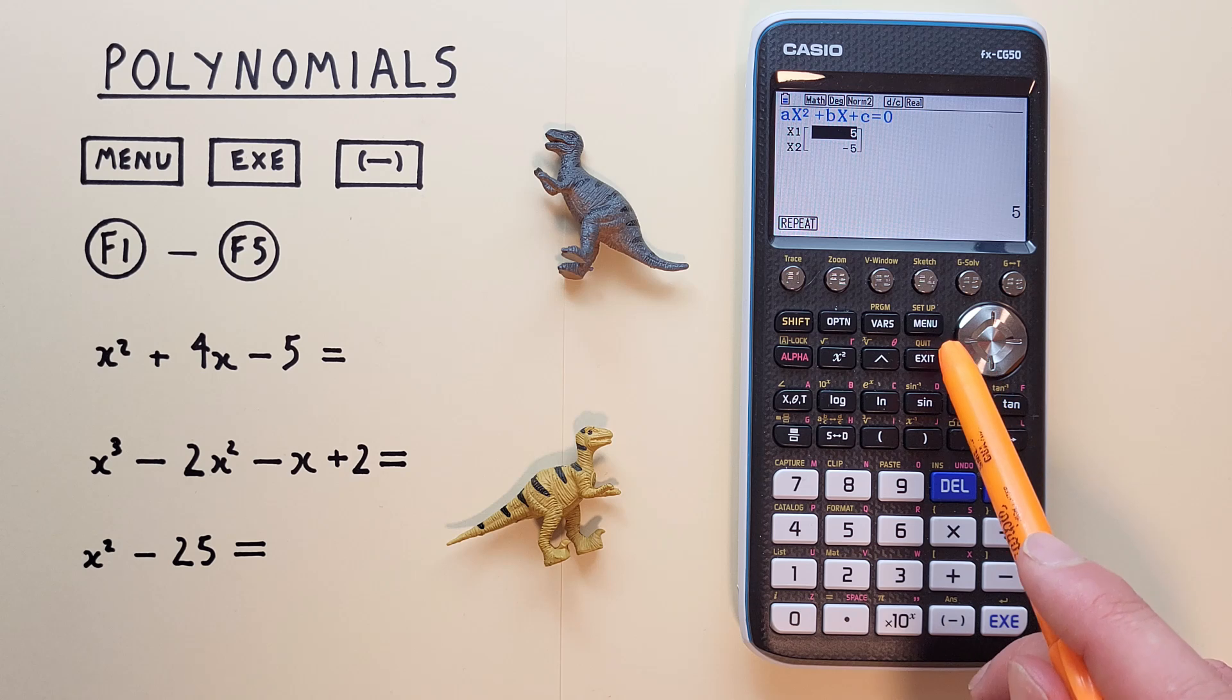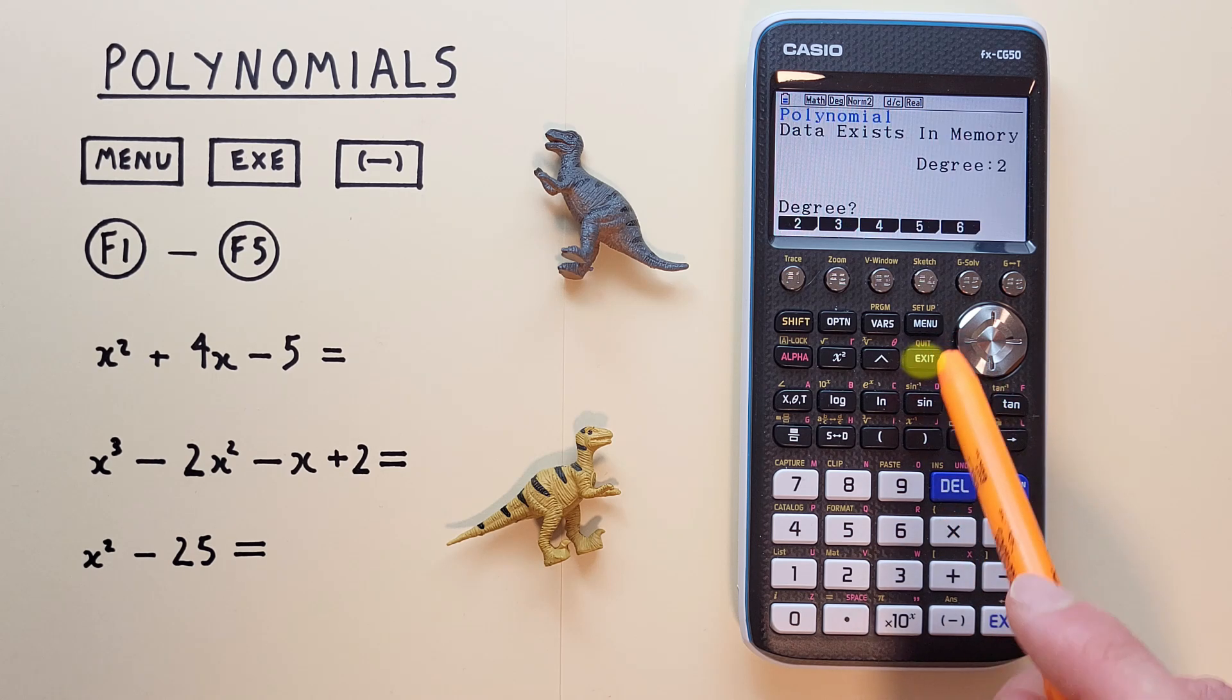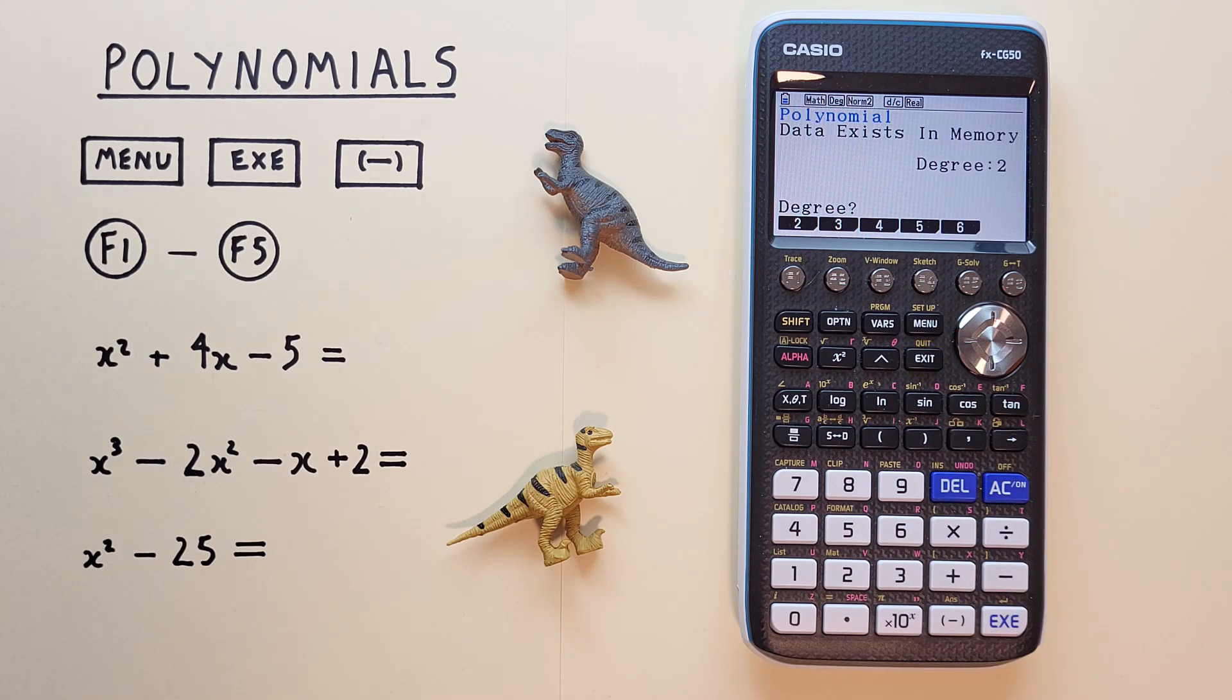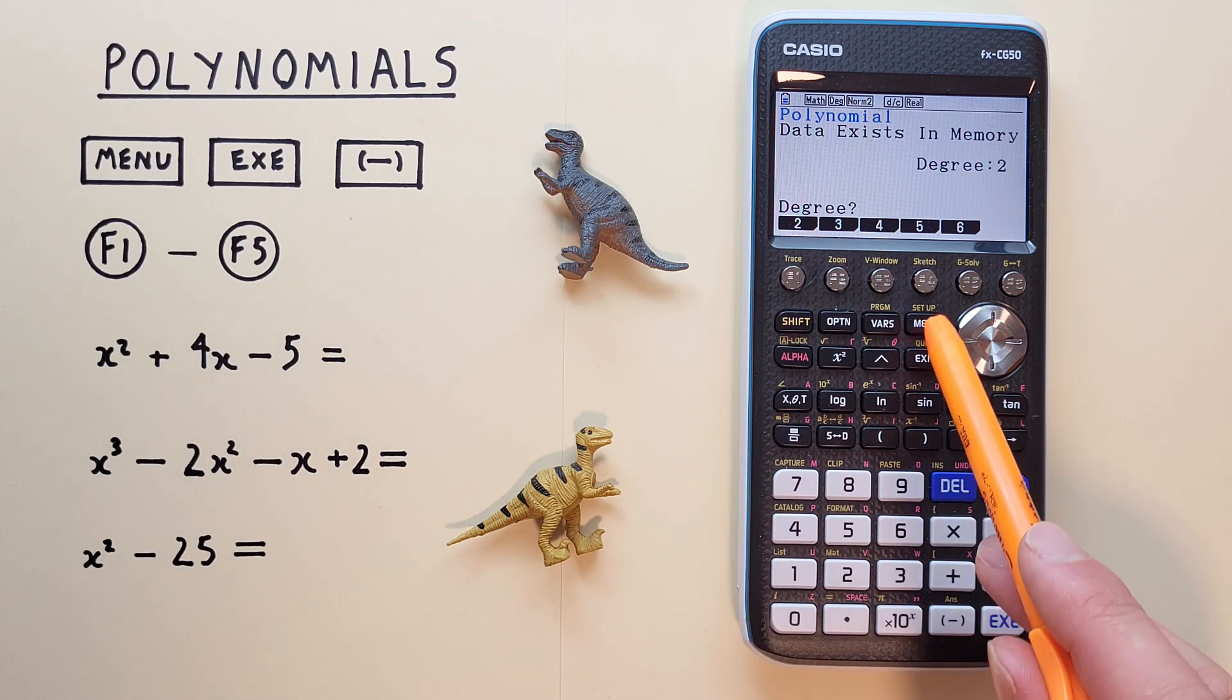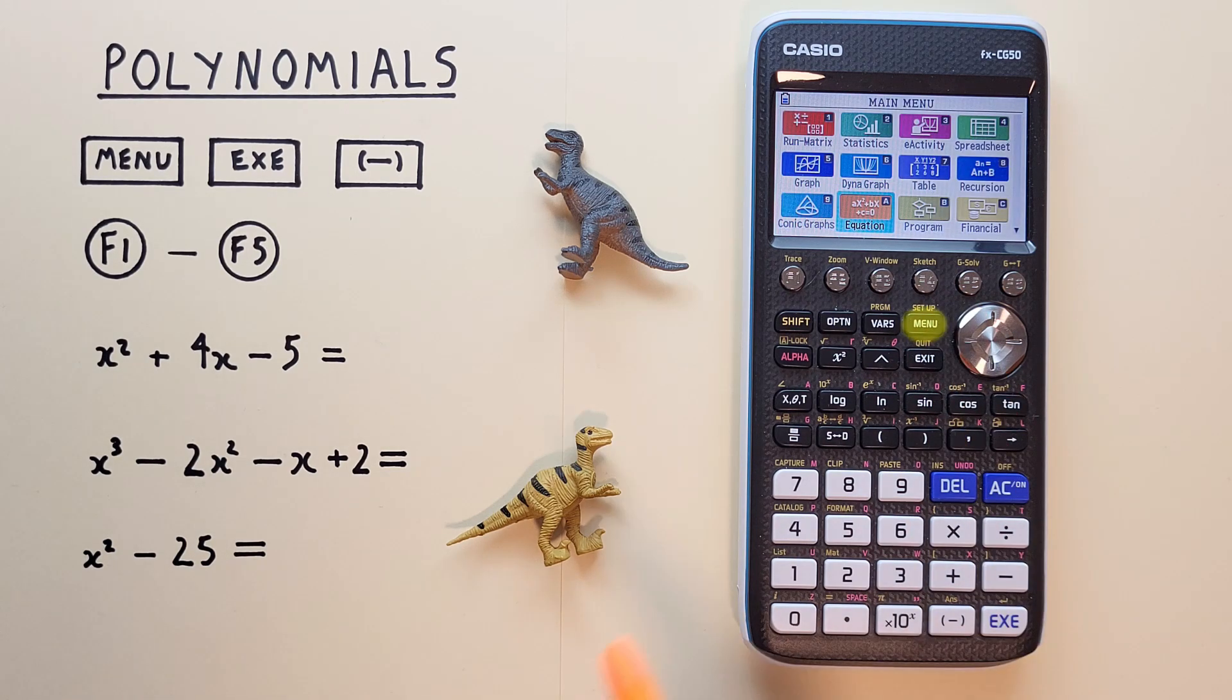And again, if we're done, we hit the exit key twice to go back to our polynomial menu. And if we're done working with polynomials and want to go back to our main menu, we just hit the menu key. And we're back at our main menu.